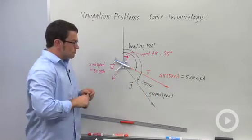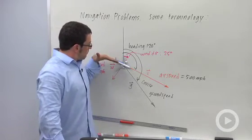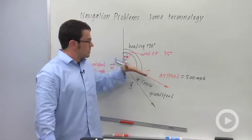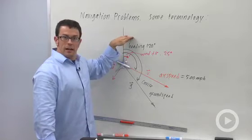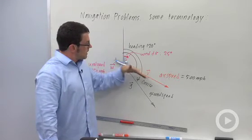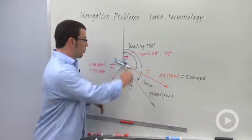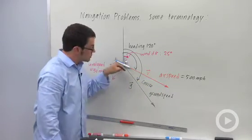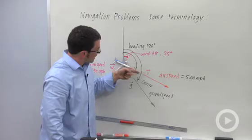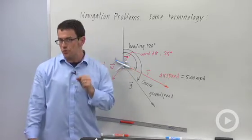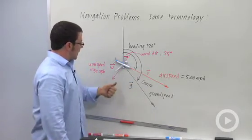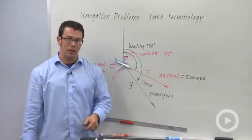So just remember, the plane is pointed in the direction that the heading provides. It's heading at 120 degrees and it's heading at 500 miles per hour. But the wind is blowing it off course, so its true course is measured by this angle, the course angle. And its true speed is going to be the ground speed. It'll either be helped or hindered by the wind.